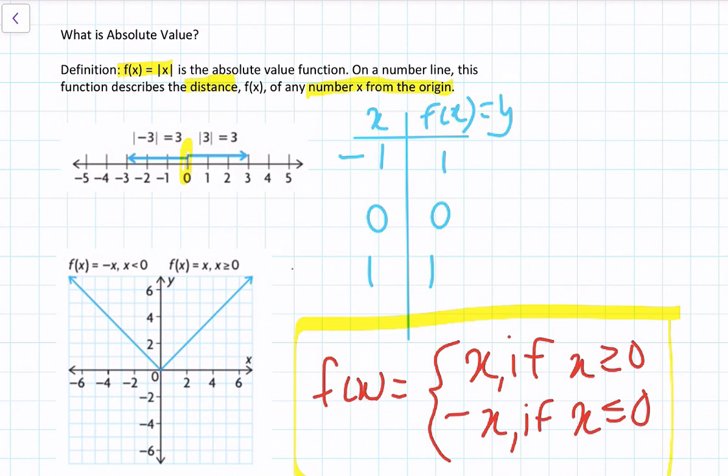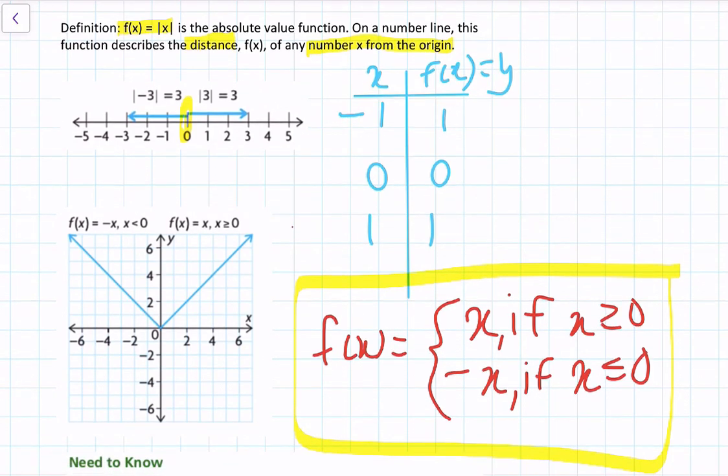That three-unit distance is always positive, and that's why the absolute value function is always positive — because we are looking at a distance. Once we know the reason behind it, it's pretty straightforward to calculate. As we see in the table of values, whether x equals negative 1, 0, or 1, you always get a positive output.